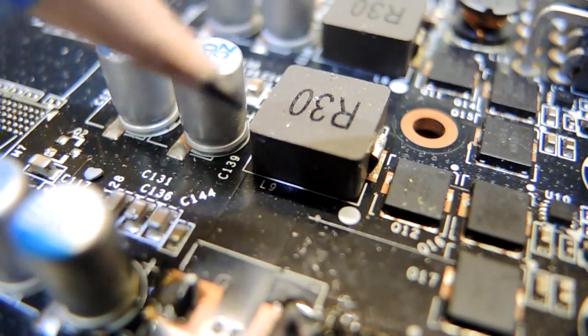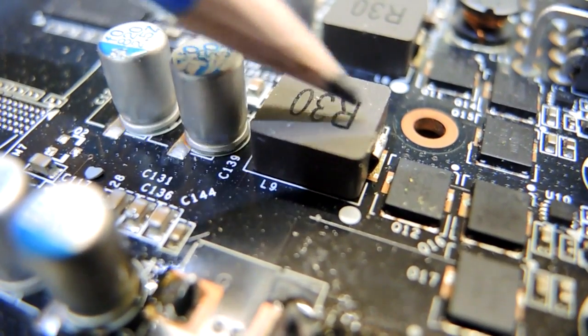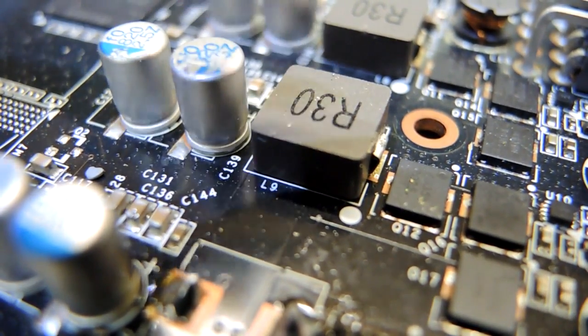Okay, reverse engineering time. This is an inductor sitting on a circuit board with a surface mount component. Let's take it off, cross section it, and see how it's put together.